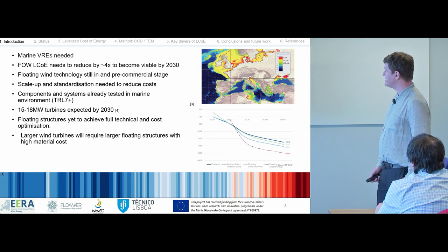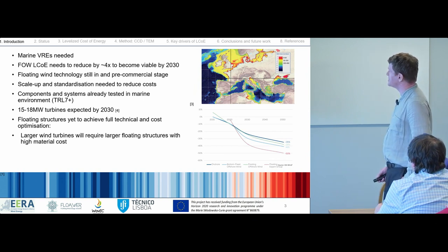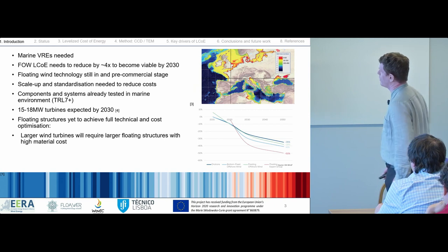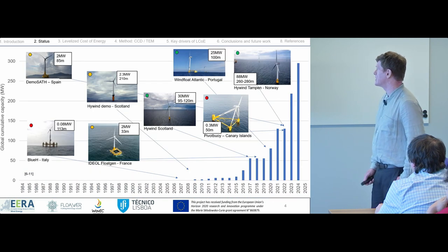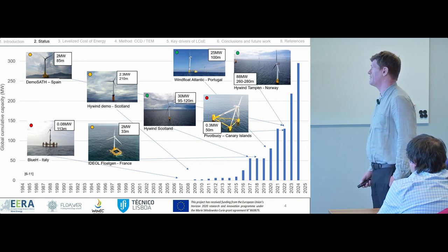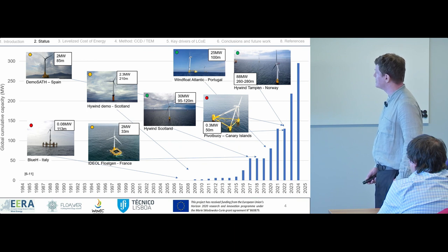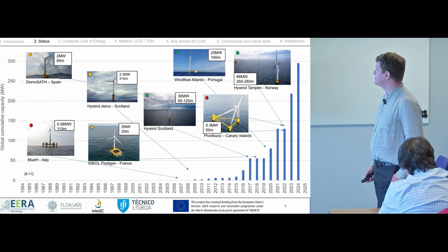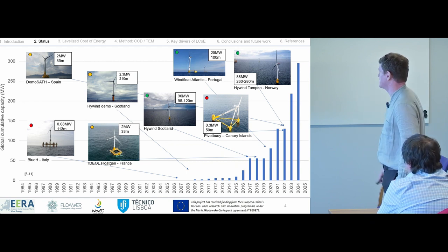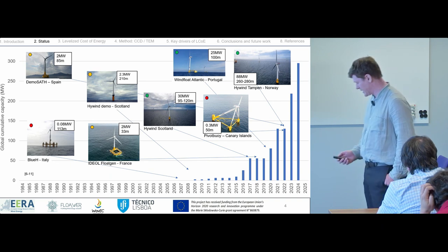We've already tested components and systems at TRL 7+, a couple at TRL 8 and 9, so that's fully deployed offshore in demonstration environments. We're expecting very large 15 to 18 megawatt turbines with very large rotor diameters by 2030. We're still yet to achieve full technical and cost optimization with the structures, and there's a lot of potential for reductions, as you can see in the bottom right plot. There's no real consensus on exactly how much we can reduce levelized cost of energy. Space is limited in nearshore areas in red up to 50 meters, but there's abundant area in yellow and green zones around Europe for floating offshore wind. As we scale up, larger wind turbines will require larger floating structures with higher material cost.